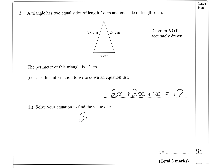Now solve it. So we've got 5x equals 12, so x equals 12 over 5, which we either know or can work out is 2.4.